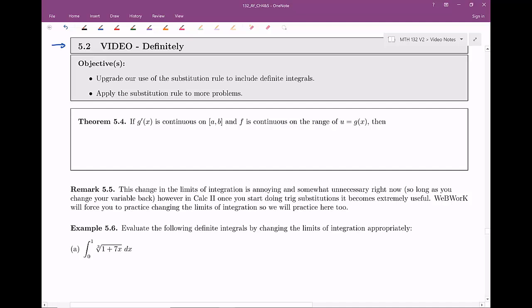So suppose now that we have a nice definite integral, something along the lines as the integral from a to b of f of g of x times g prime of x dx. And so g prime is a nice continuous function on a to b, f is continuous on the range. In this case, this will be equal to the integral of some f of u, du, but now that we're integrating with respect to u, we have to change the bounds.